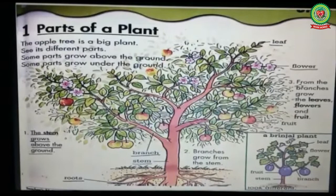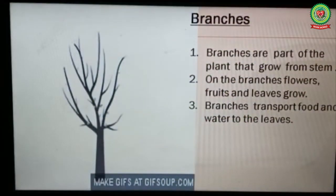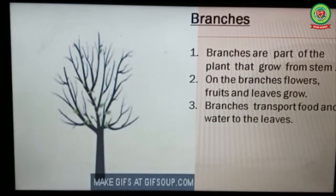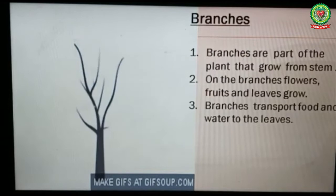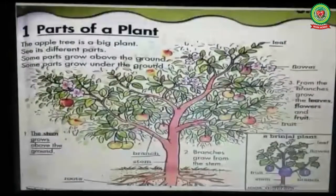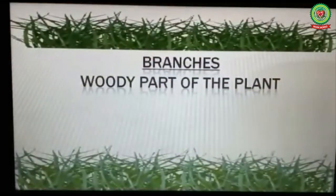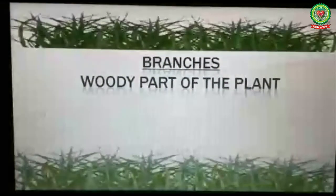As you can see in picture number 2: branches. Branches grow from the stem. Children, branches are part of the plant that grow from the stem. On the branches, flowers, fruits, and leaves grow. Branches transport food and water to the leaves. Children, underline the word 'branches' and write down its meaning: woody part of the plant.